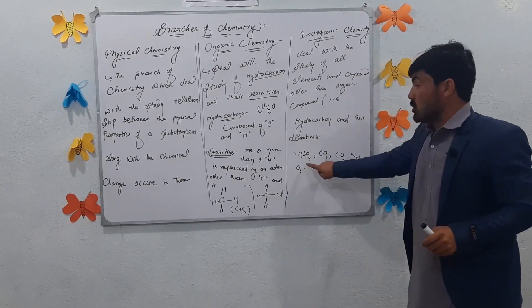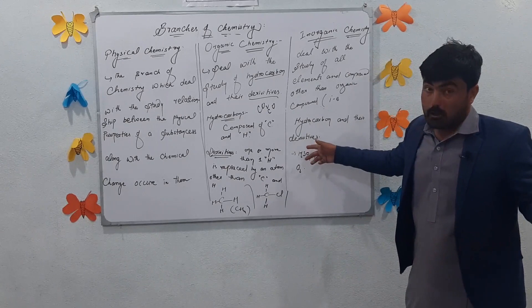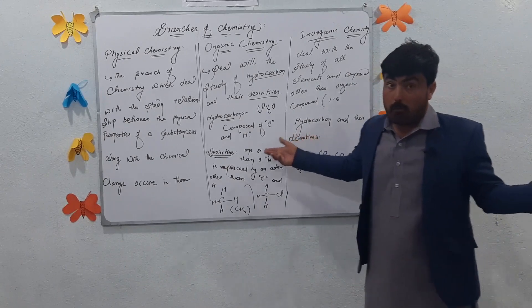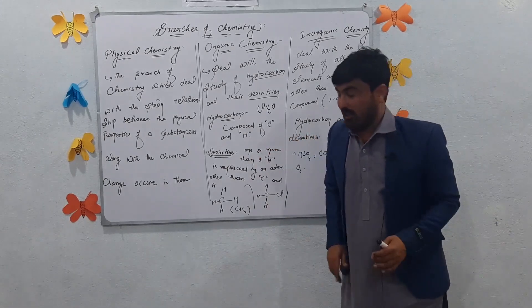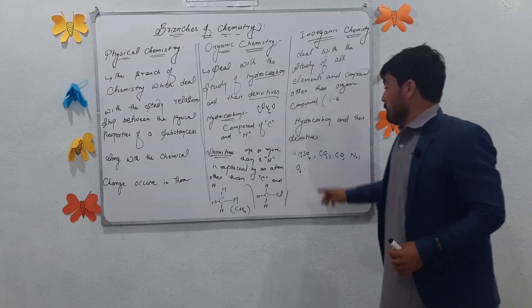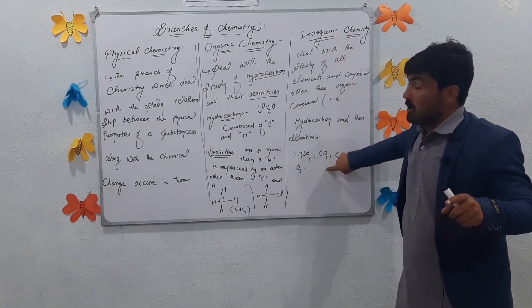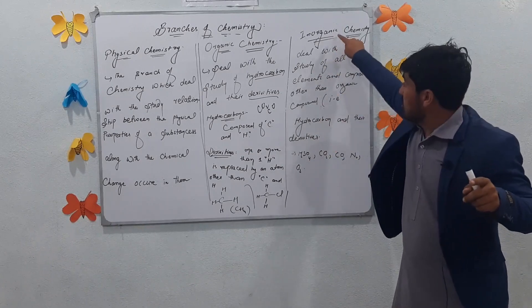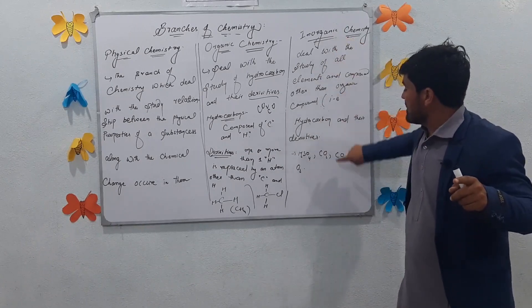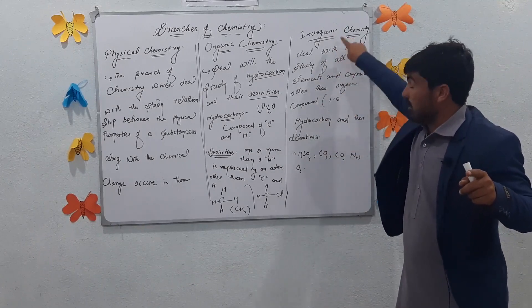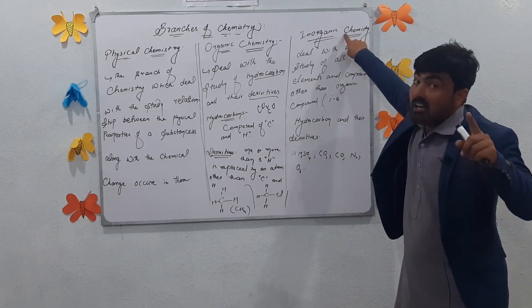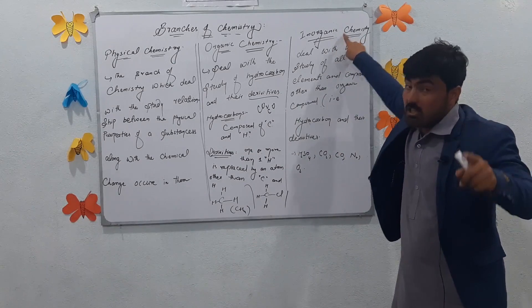So this includes sulfuric acid, chemical acids, and so on — we study these in inorganic chemistry. CO2 is studied in inorganic chemistry. Carbon dioxide is studied in inorganic chemistry.